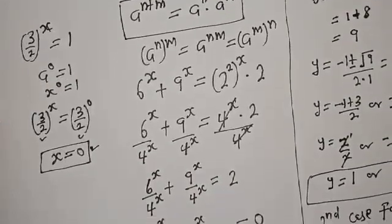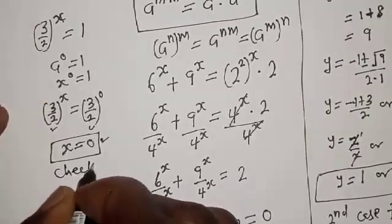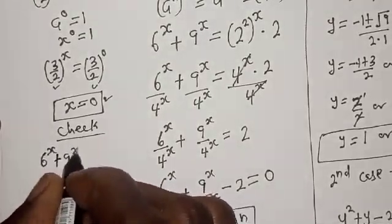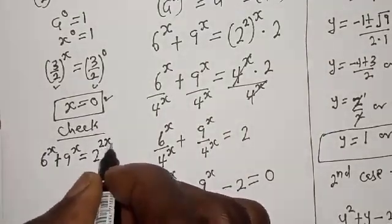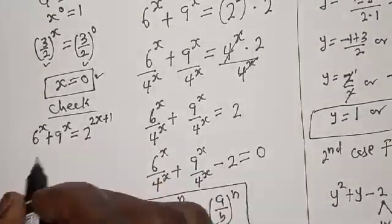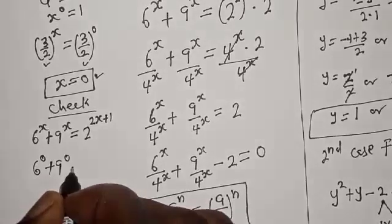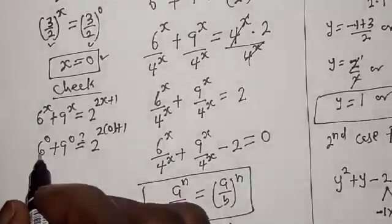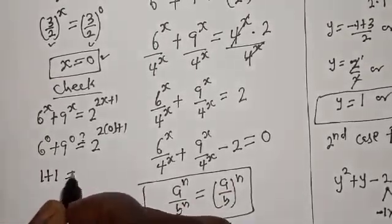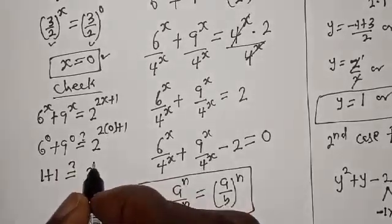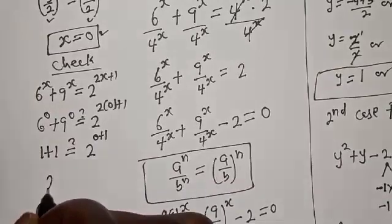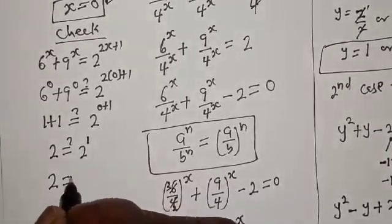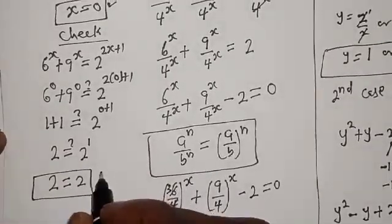We can check to confirm if our answer is right. To check, we substitute s equals 0 into the given equation: 6 raised to power 0 plus 9 raised to power 0 equals 2 raised to power 2 times 0 plus 1. This gives 1 plus 1 equals 2 raised to power 1, which is 2 equals 2. This satisfies the given equation at s equals 0.